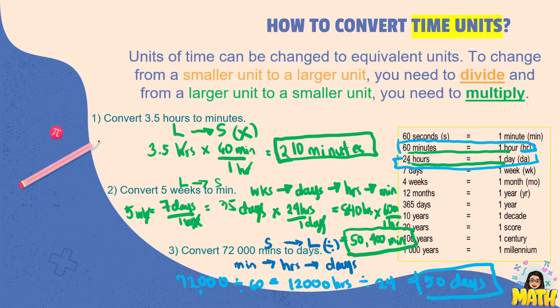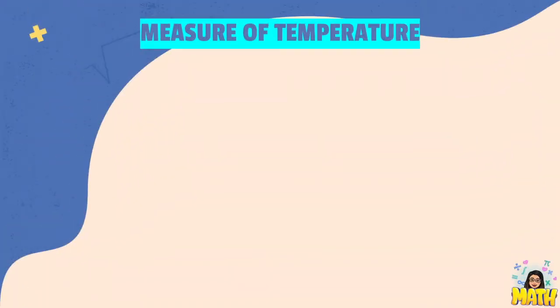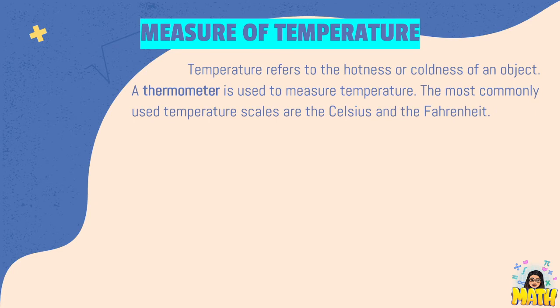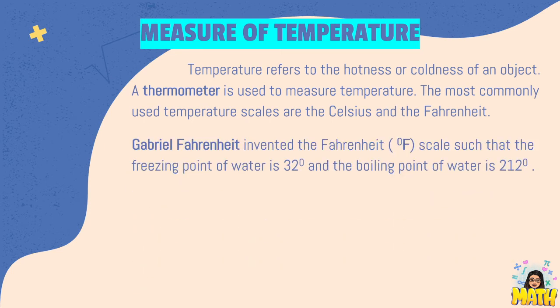So that means we have 50 days in 72,000 minutes. Okay, so that's how we convert time units. The last measure that we're going to discuss is the measure about temperature. Temperature refers to the hotness or coldness of an object. A thermometer is used to measure temperature, and the most commonly used temperature scales are the Celsius and the Fahrenheit.